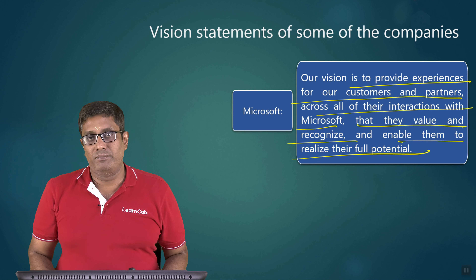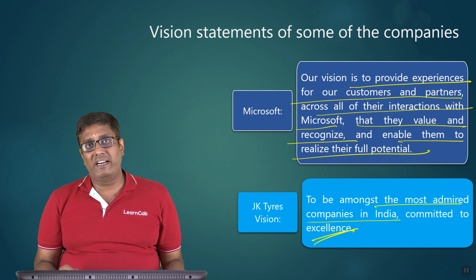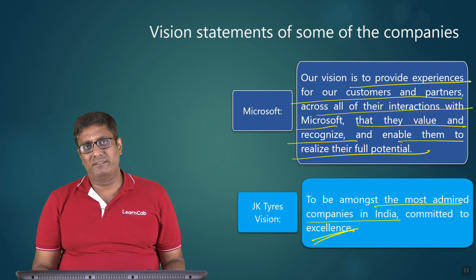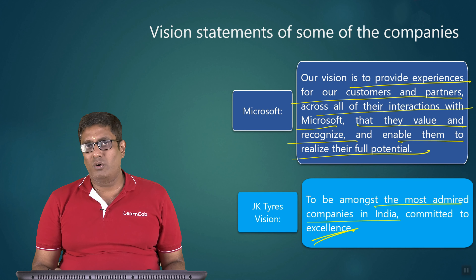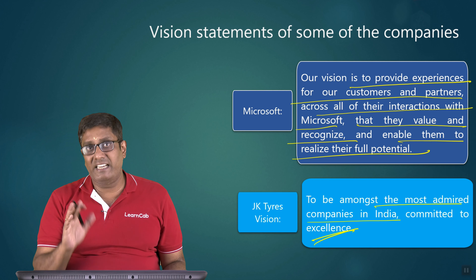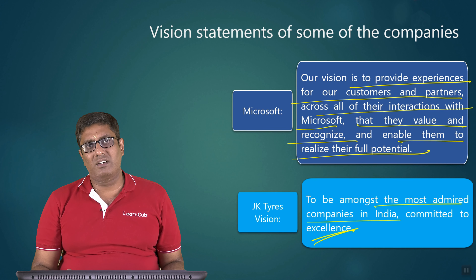JK Tyres: 'To be amongst the most admired companies in India committed to excellence.' They want their vision to be the most admired company in India — they are not trying global yet. First they want to become number one tyre company in India. There are many competitors — Apollo Tyres, Radial, TVS Tyres, CEAT Tyres. Their vision statement reflects that ambition.